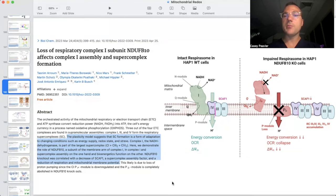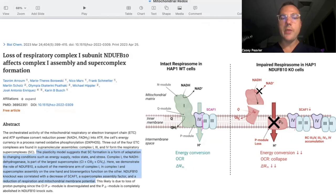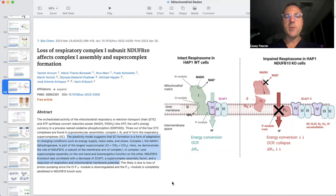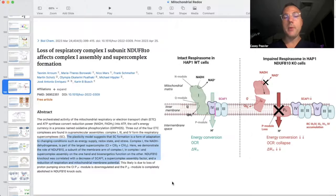The plasticity model holds that super complex formation is a form of adaptation to changing conditions such as energy supply, redox state, and stress. Complex one, the NADH dehydrogenase, is part of the largest super complex C1C3C4. Knockout studies — where a key protein helping complex one form is eliminated — showed a correlation between loss of a scaffolding protein called SCAF1, a super complex assembly factor, and reduction of respiration and mitochondrial membrane potential.